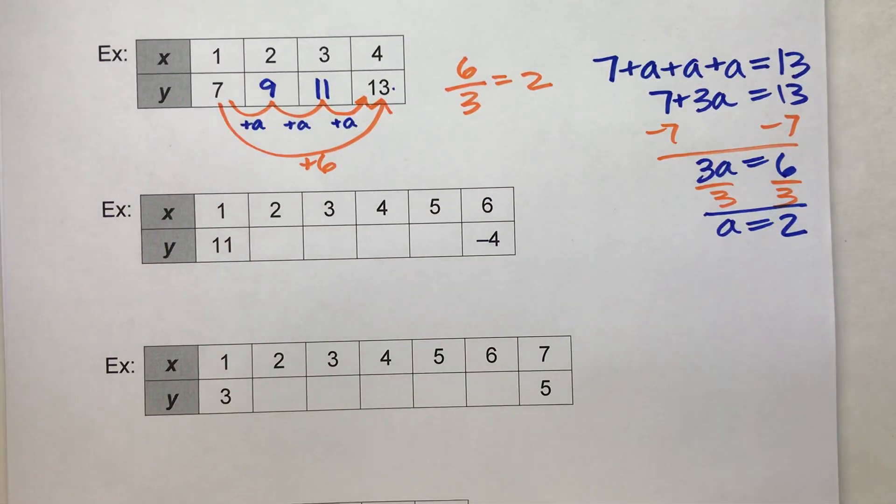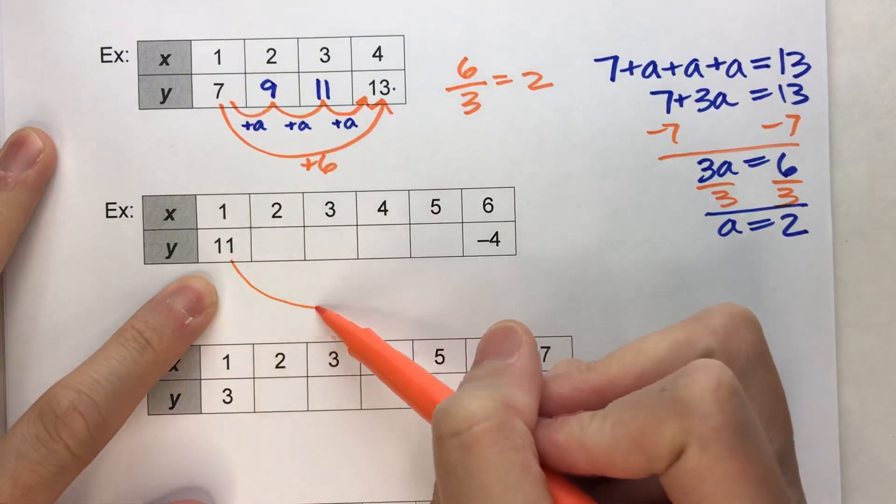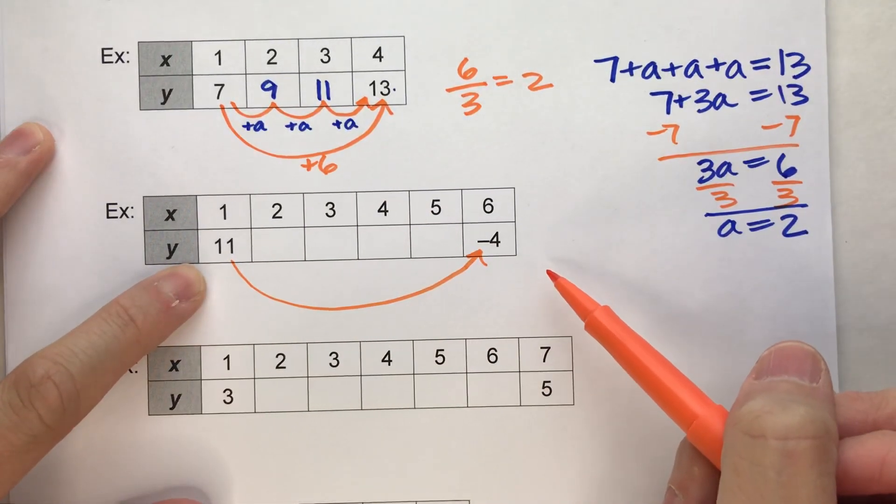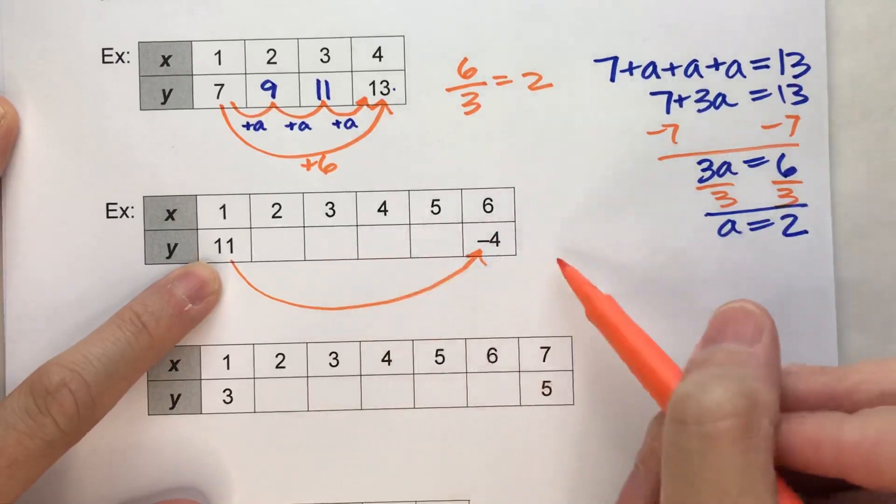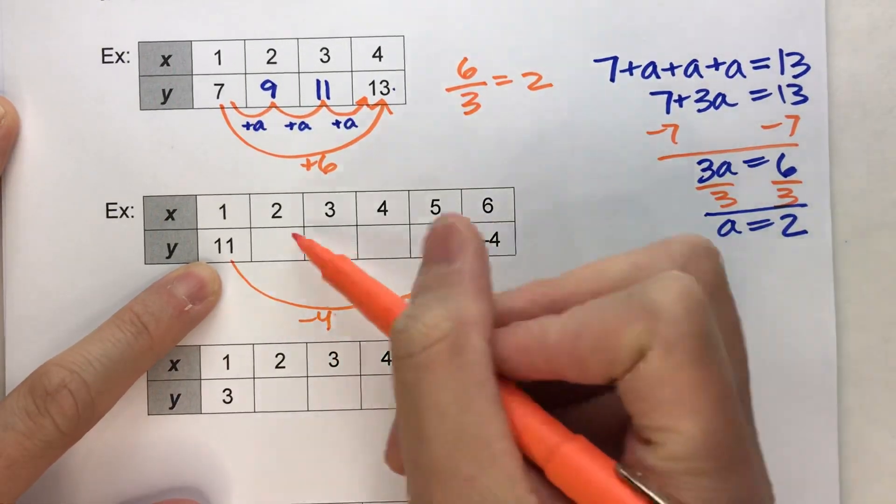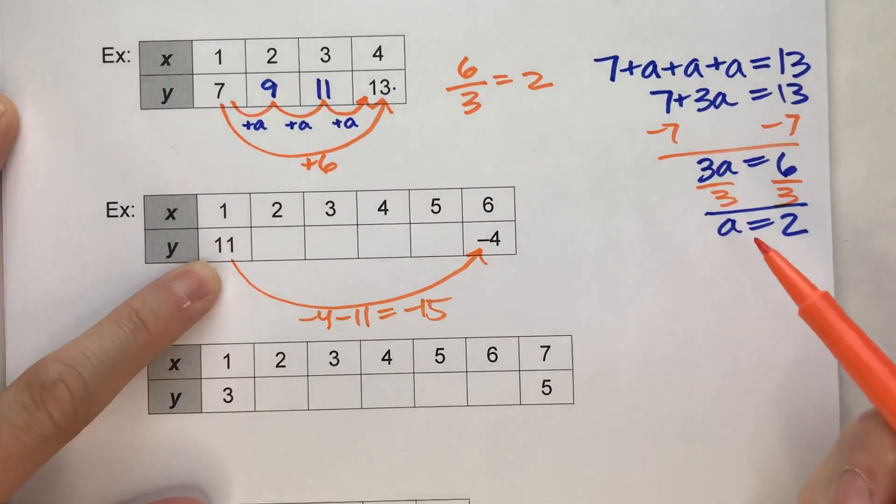So let's do a couple more here. So this one, we're starting at 11, and notice it's going to negative 4. So this one's actually decreasing. So to figure out how much it's decreasing, it ended up at negative 4, and it started at 11. So I'll subtract those. So that tells me it decreased by 15.